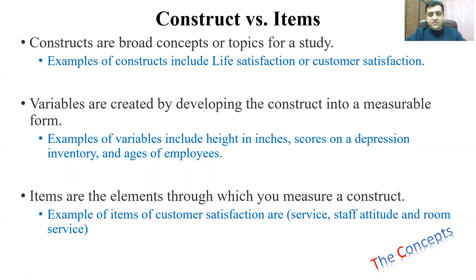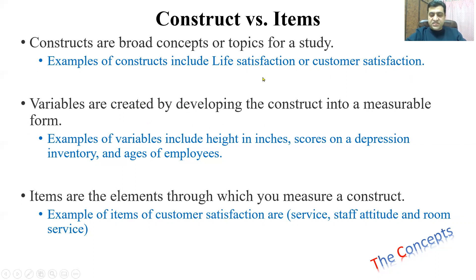But variables are actually created by developing the construct into measurable form. The idea is: how can you know if somebody is satisfied with his or her life? How can we know that our customer is satisfied? In order to know life satisfaction or customer satisfaction, we need to ask a certain number of questions from a person, and then we determine whether the person or the customer is satisfied. So, how do we measure those variables? Let's talk about some more variables and then move towards the items.